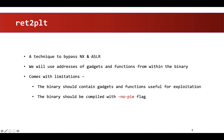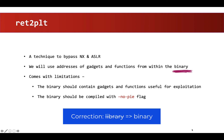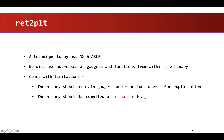We will use the addresses of gadgets and functions from within the library. This particular technique has some prerequisites for the attack to work. The binary should contain gadgets and functions that can be useful for our exploitation, and the binary should be compiled using the no-PIE flag as mentioned in the last lecture. Now let's use the same binary that we used to understand PLT and GOT concepts, since it meets all the requirements.